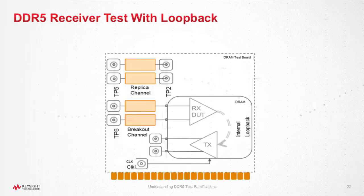The DDR5 approach is to test the receiver using the loopback method. As stated before, margins are getting smaller with increasing speed. As a consequence, DDR5 will require devices to support receiver testing by providing appropriate loopback capabilities.